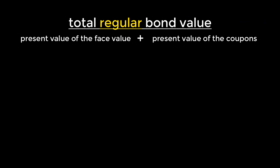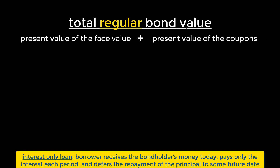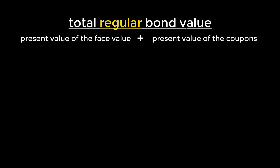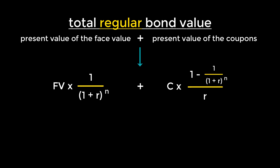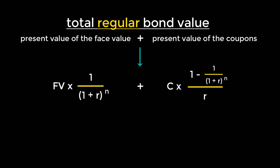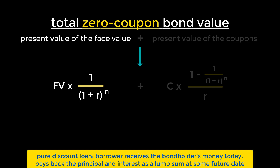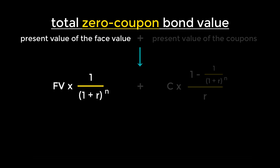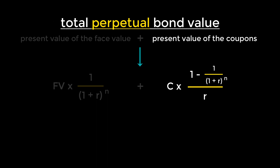There are several kinds of bonds. The first and most widespread is a regular bond, which resembles an interest-only loan. Its total value is the sum of the present value of the face value and the present value of the coupon payments. The second is a zero coupon bond, which resembles a pure discount loan. Since the coupon payment is zero, we ignore the annuity component — the value equals just the present value of the face value. The third is a perpetual bond, which behaves like a perpetuity, making coupon payments forever. Its value derives solely from the present value of the coupon payments, so we ignore the face value component entirely.